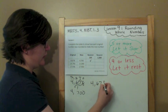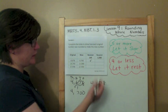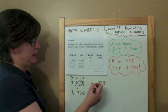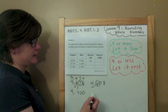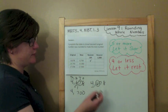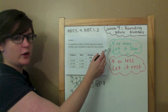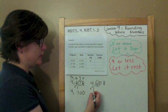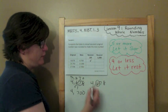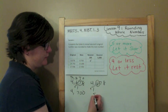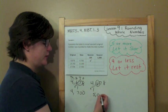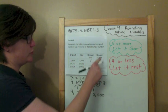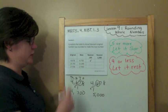Just to make sure it's the only match, let's check rounding to the nearest thousand. Spotlight to the right — five or more, let it soar! Four plus one is five, and everything else becomes zeros. So no — it's just the nearest hundred.